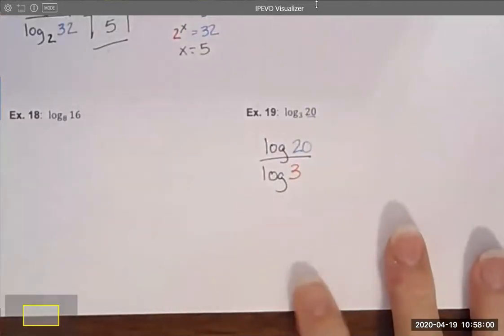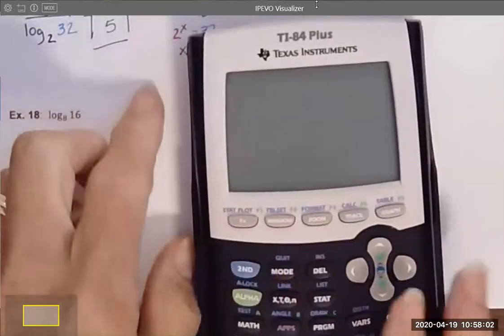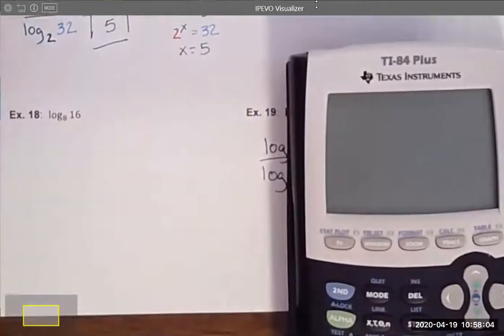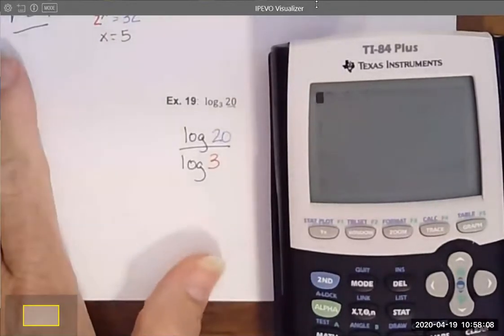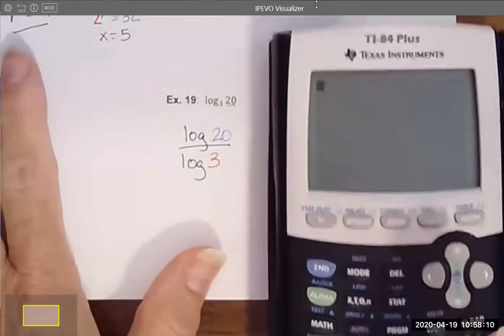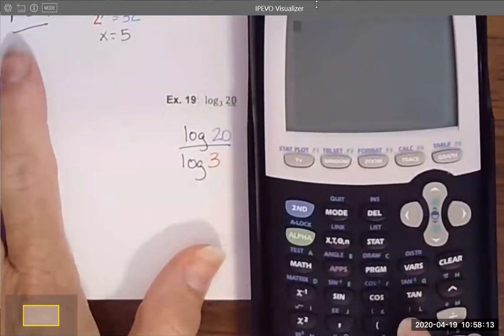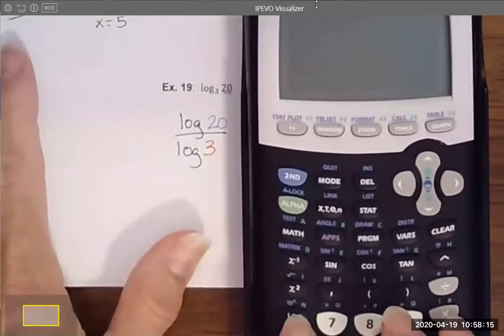And I actually brought my calculator with me, handy dandy. And I am going to type this in and let you see what that process would look like. The log button is right next to your number seven. So I'm going to click log, bounce it up here.